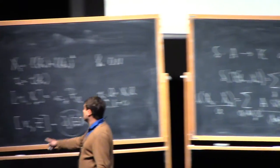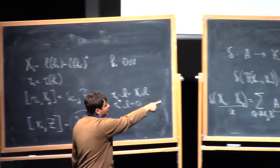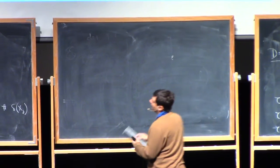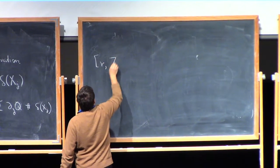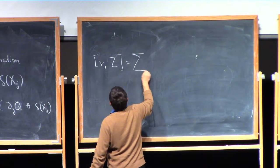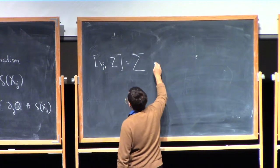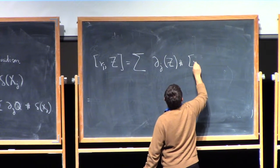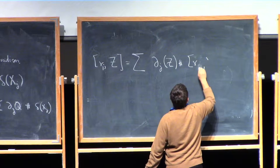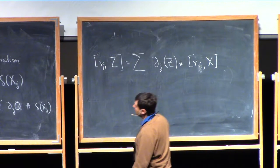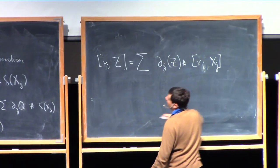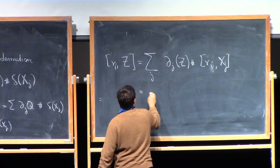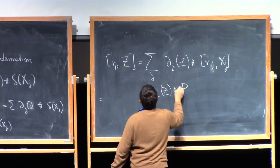This is a derivation, so I can write down that same formula for the derivation of taking the commutator with R. The commutator of r_i with some z equals the sum over j of r_i applied to d_j of z, hashed with r_i acting on x_j. This is zero unless i equals j, so this is just d_i of z hashed p_omega, exactly as advertised.